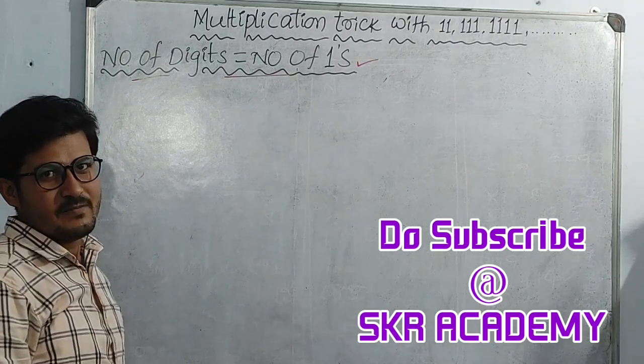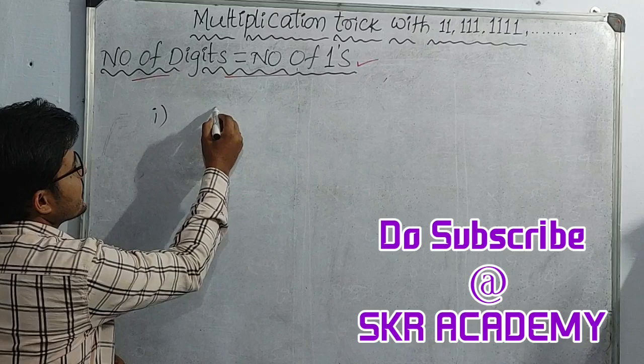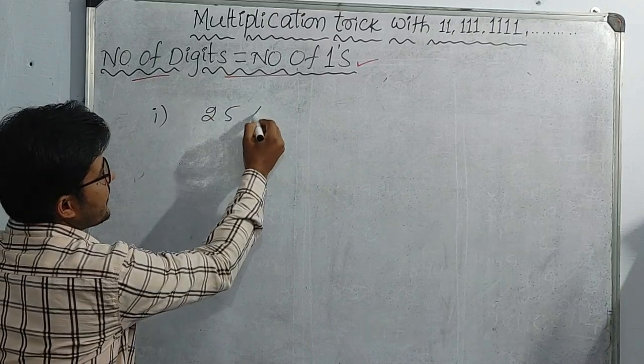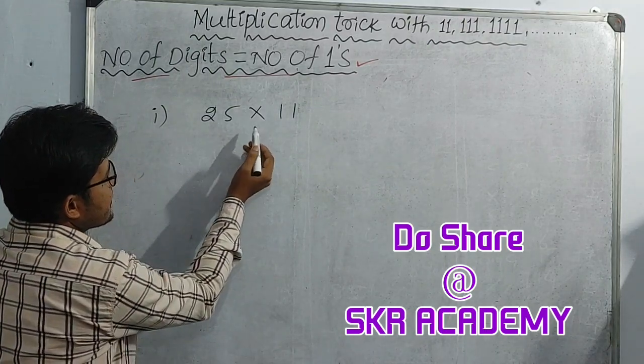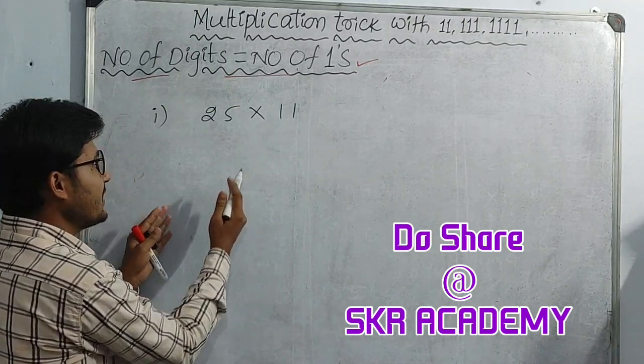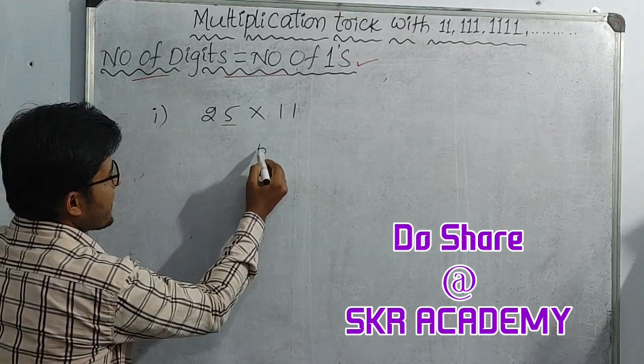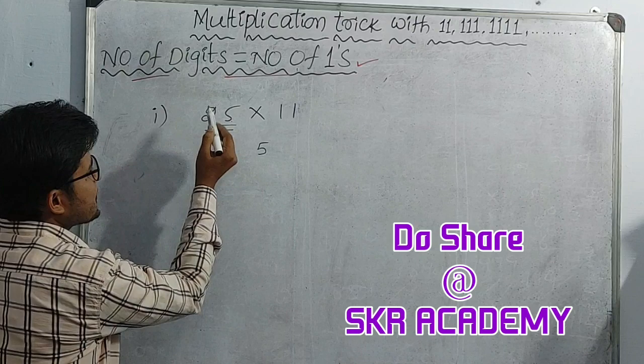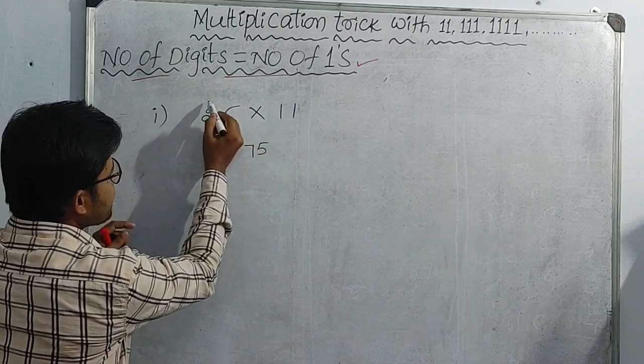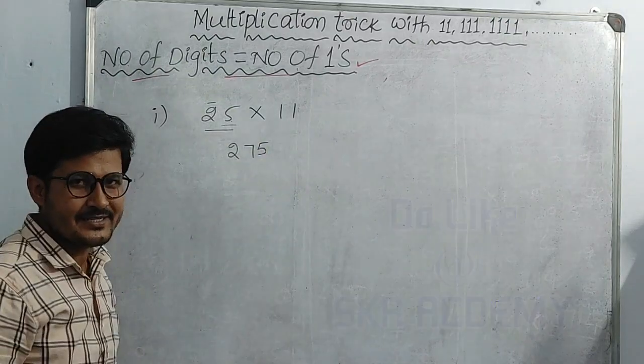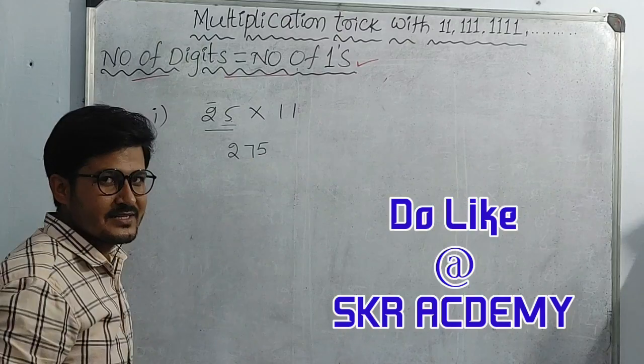First, let's start with a 2-digit number. 25 into 11. The calculation is from right to left. Write 5, then 5 plus 2 equals 7, then 2 on the left. So 25 into 11 equals 275.